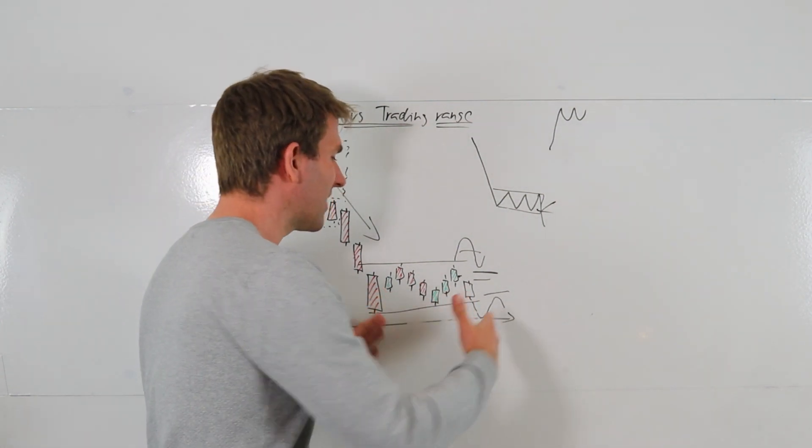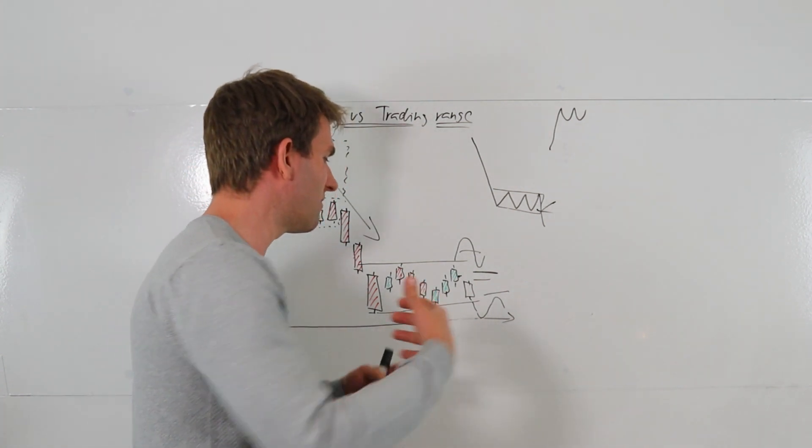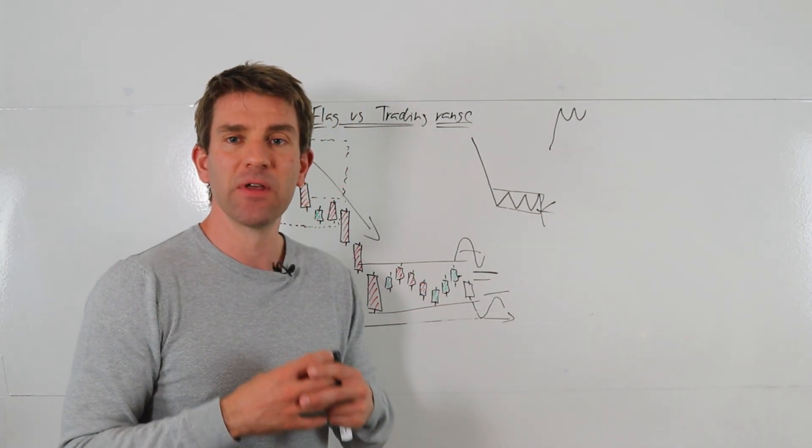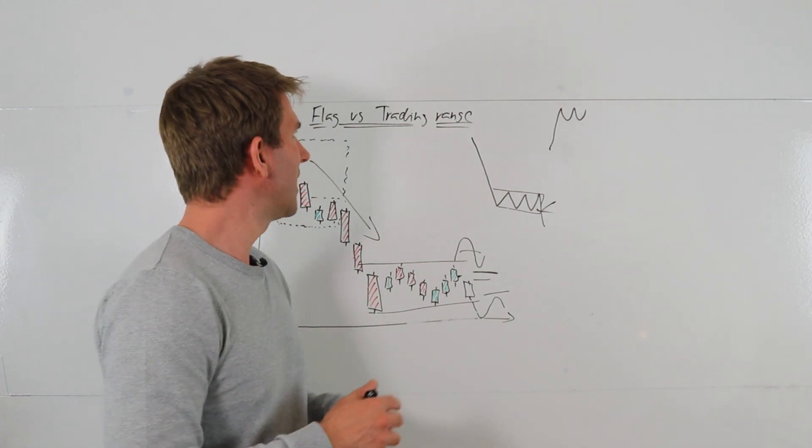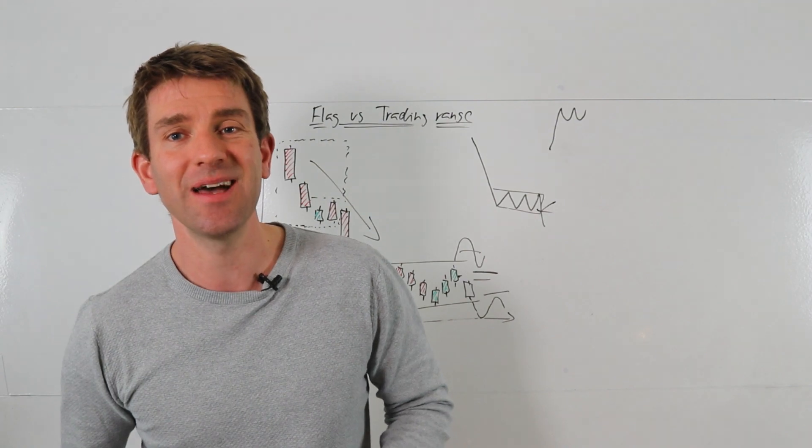Range is when it gets accepted, kind of ping-ponging back and forth there, never really need volume or volatility, everything's quieting down. So you trade them a little bit differently. Anyway guys, flags versus trading range, keep your risk managed whatever you're doing. I'll see you in the next one, take care, bye.